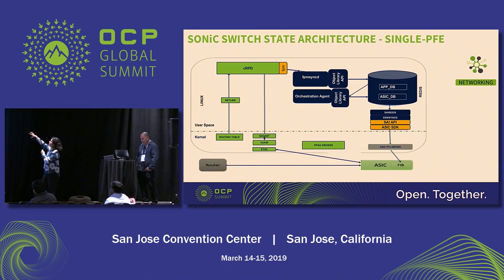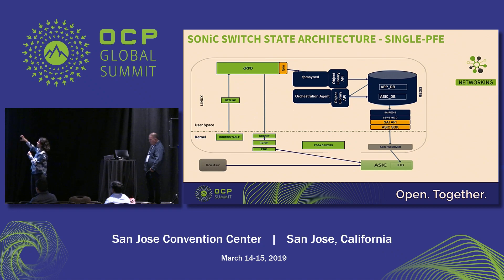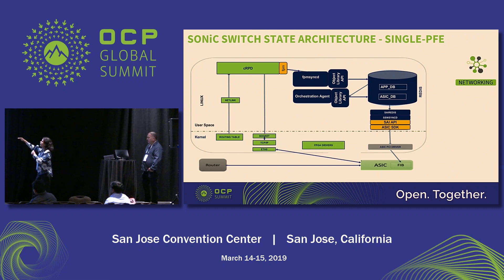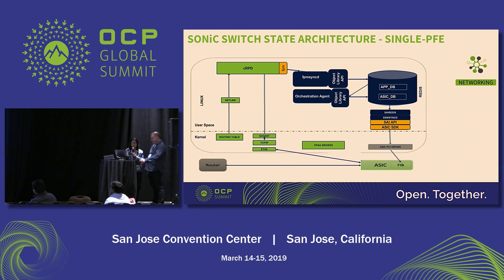Let's look at the architecture diagram of a single PFE system. All the blue boxes — Redis container, FBMsyncD, orchestration agent, PSI — are coming from SONiC. We provide CRPD and have also done development work on the platform drivers. A packet comes to the ASIC, goes up the TCP stack to CRPD, which pushes the route using netlink. The other interface pushes the FIB onto Redis, and PSI pushes it down to the FIB.